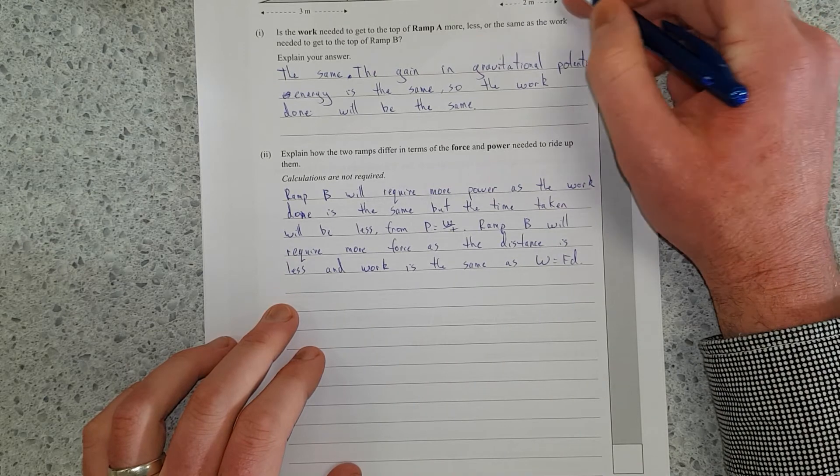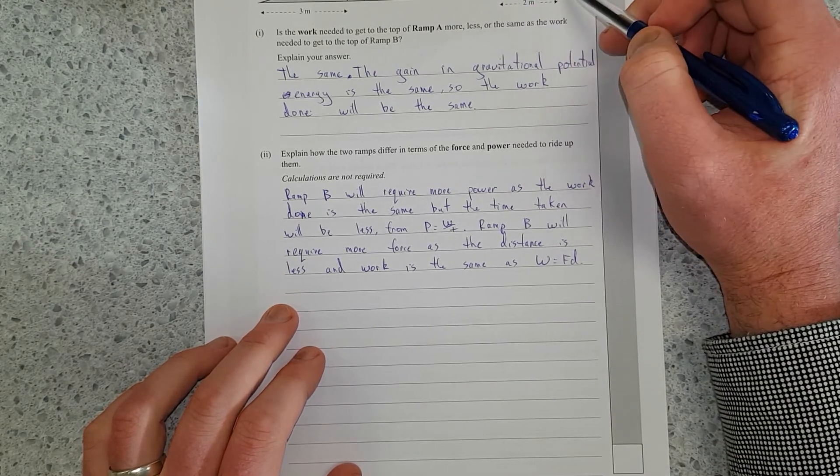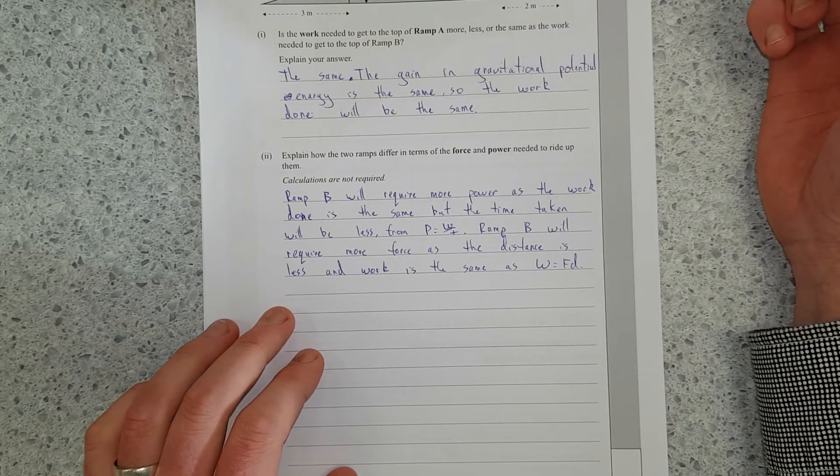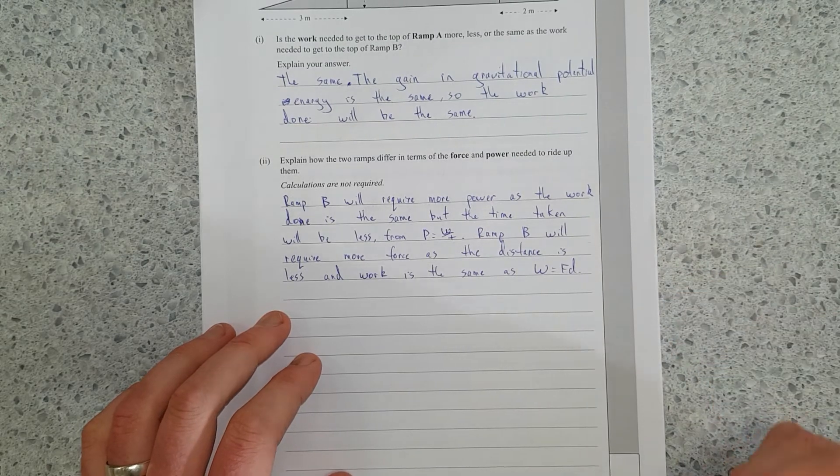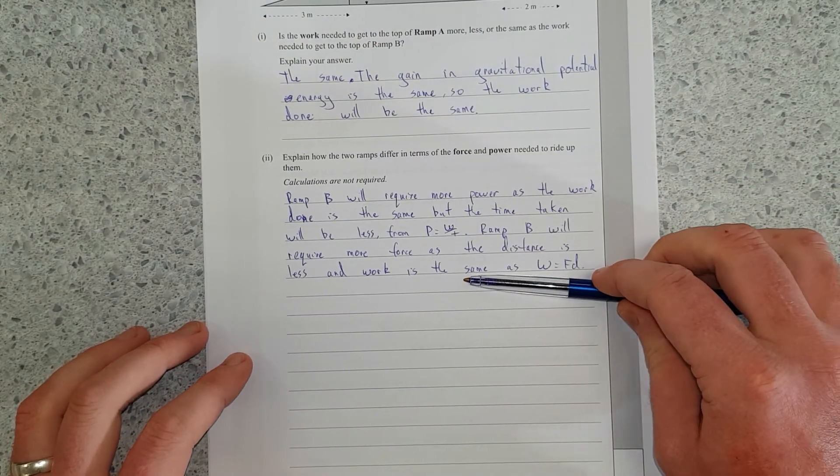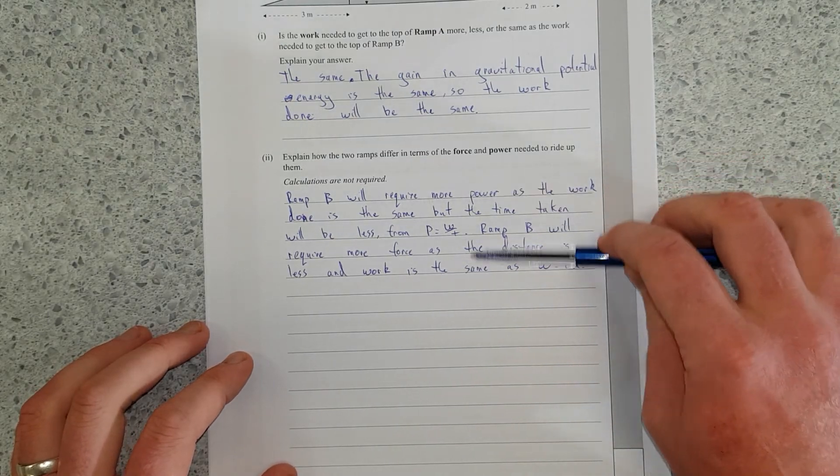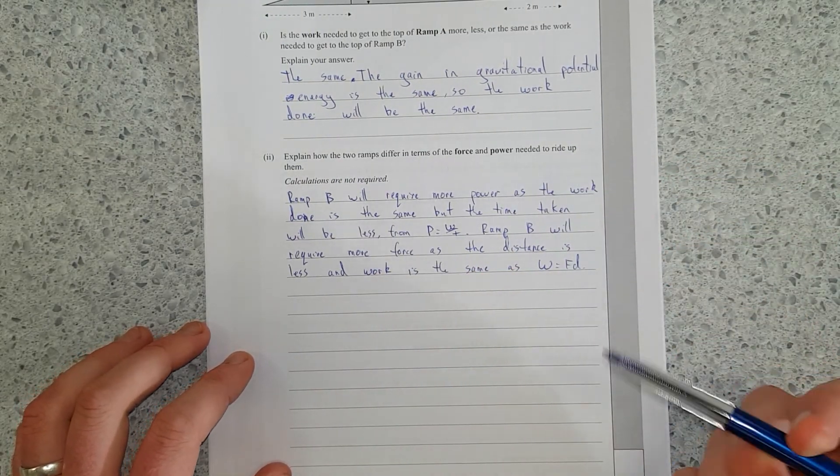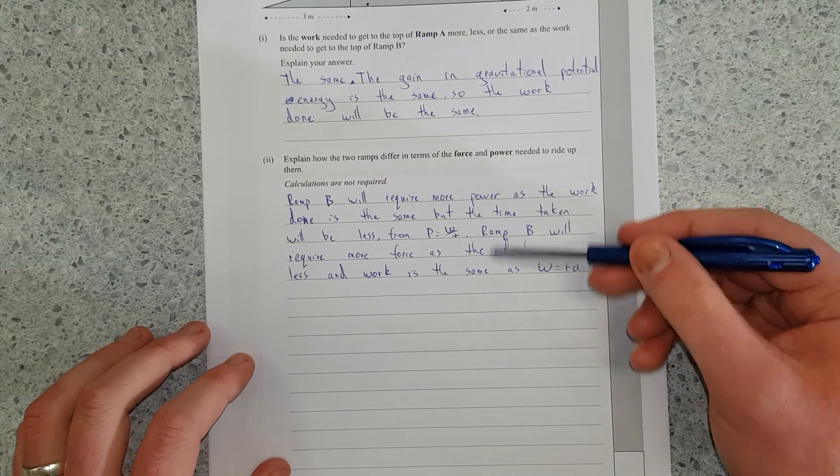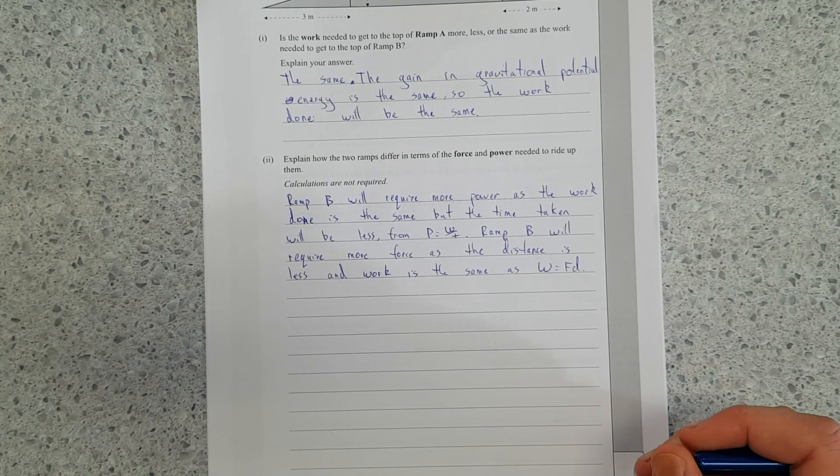Ramp B will require more force as the distance is less and the work is the same. So either way, the work required to get to the top is going to be the same. Ramp B, as you can see from the photo, it's going to be less distance from here to here, so the force must be more. You can answer this question conversely. So I could go ahead and say literally the opposite for ramp A, but that pretty much answers it. It just says how they differ. It doesn't say what B is and then what A is. So that's fine.